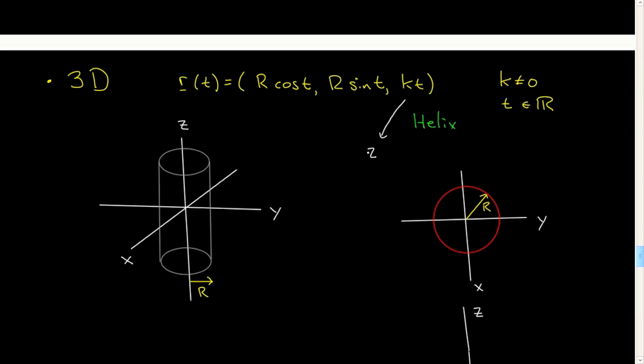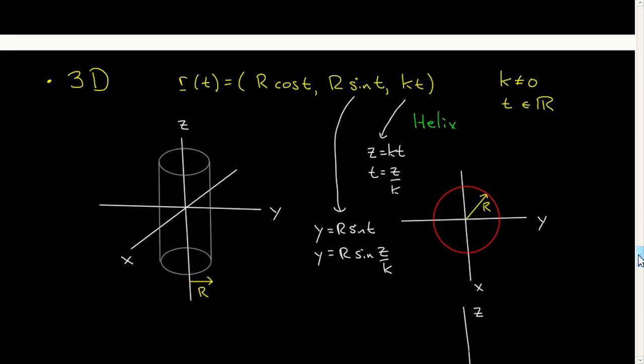So Z is equal to KT. K is not equal to zero, therefore I can solve for T. T is equal to Z over K. And now I have T and I can plug it in here to Y. So Y is equal to R sine T. That is to say it's equal to R sine Z over K. Let's repeat that way. So in fact, let's bring that down just a little bit more. So that then is what I want to plot over here.